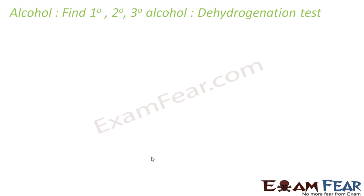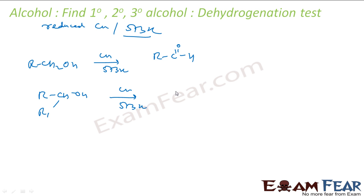The next is dehydrogenation test. When the alcohol is reduced, sorry it is not reduced, we use reduced copper and heat 573 Kelvin. So if you see here, if I have primary alcohol and if I use copper with the heat, what you get is aldehyde. If I have secondary alcohol, if I use copper with 573 Kelvin, what you get is ketone.